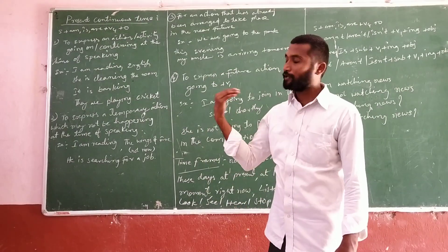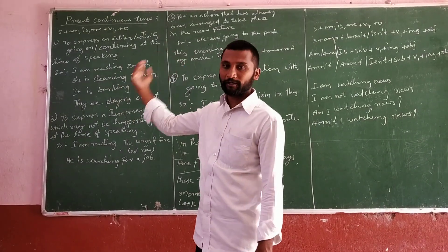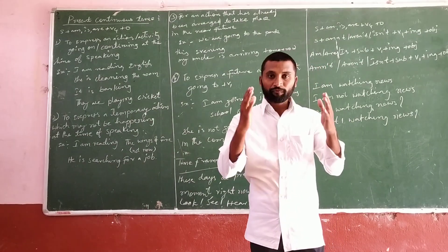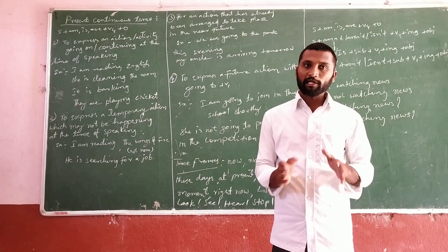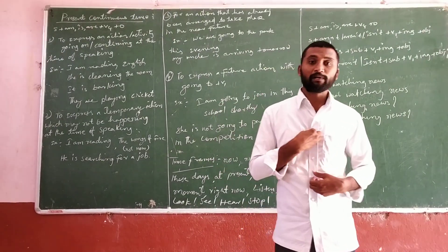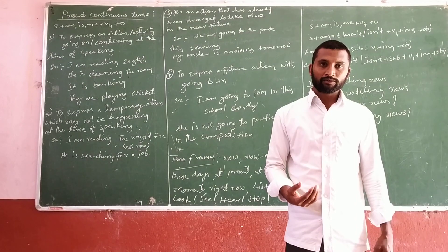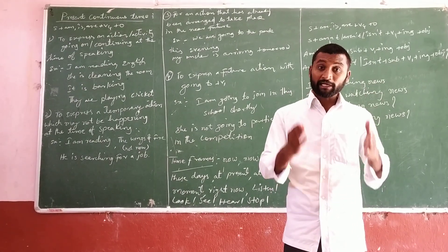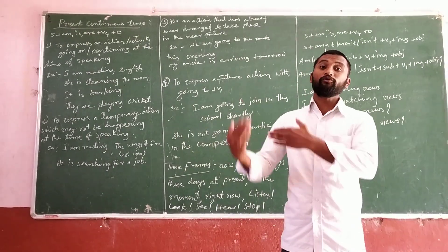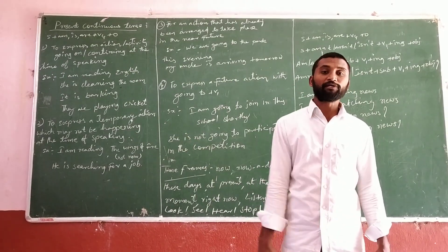If you see the uses of present continuous tense, we can use it in four ways. The first way is to express an action or activity going on and continuing at the time of speaking. If any action is in a continuous process at the time of speaking, then we use present continuous tense. This is the first rule of present continuous tense.